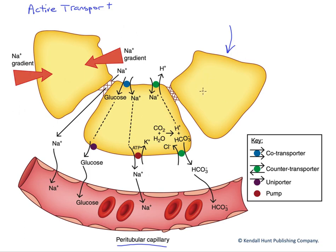Primary active transport is active transport driven by the energy release of ATP hydrolysis. These are also called pumps. Here we have an example in the basolateral membrane: the sodium-potassium pump, which utilizes the energy released from ATP to drive sodium out of the cell and potassium into the cell against their electrochemical gradients. This generates a sodium gradient into the cell from either the basolateral or apical side of these nephron cells.